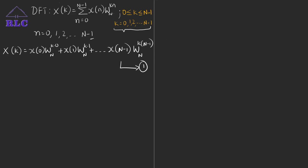Substituting k equal to 0 in equation 1, we get X[0] equal to x[0] into W_N power 0, plus x[1] into W_N power 0, and so on, up to x[N-1] into W_N power 0. This is X[k] at k equal to 0.